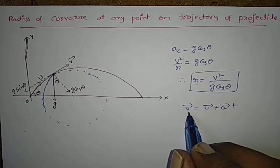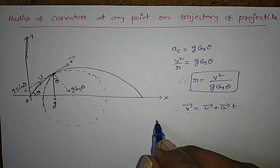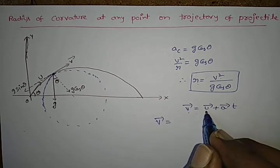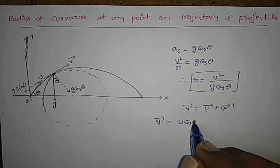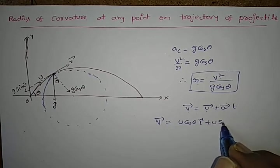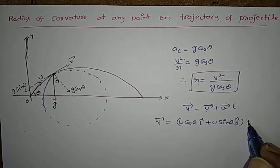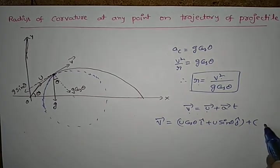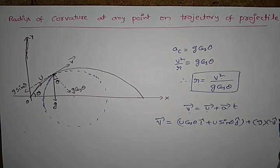So v is equal to initial velocity vector, which is u cos theta i cap plus u sin theta j cap, plus acceleration vector which is minus g j cap into t.